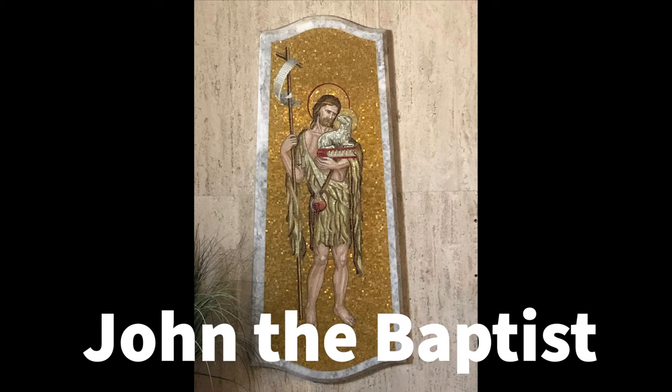One day, an angel appeared to Zachariah and announced that he was to have a son named John, who would prepare Israel for the Messiah Jesus. Zachariah doubted that Elizabeth, his aged wife, could bear a child.